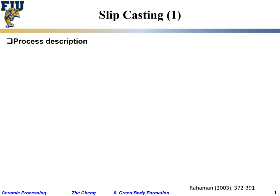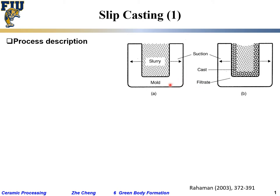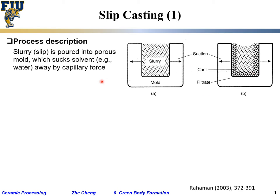Slip casting process: you have a porous mold, you pour the slurry — your suspension — into it, and over time the capillary suction action draws moisture away. You can also apply vacuum. The result is a so-called green cast, a powder compact. The slurry is put into the porous mold which sucks the solvent away by capillary force. Applying vacuum is more expensive, but sometimes necessary.